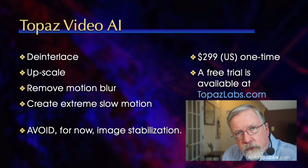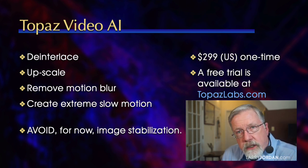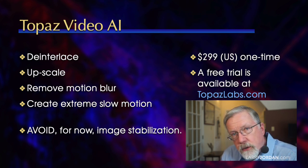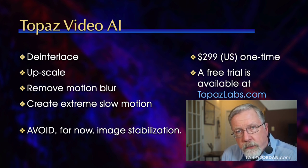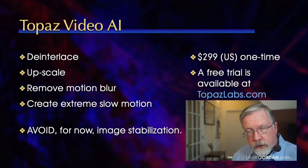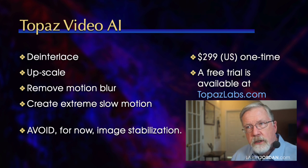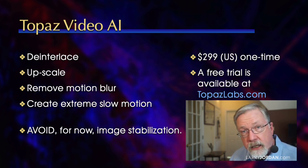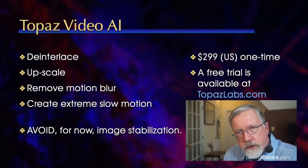Topaz Video AI is created by Topaz Labs. It's an AI-assisted video enhancement tool that de-interlaces video, upscales video, removes motion blur, and creates extreme slow motion. It also does image stabilization, but image stabilization is extremely poorly implemented. What I can do in 13 seconds inside Final Cut takes 55 minutes inside Topaz Video AI. I love the de-interlacing and I like the upscaling, but don't use it for image stabilization.